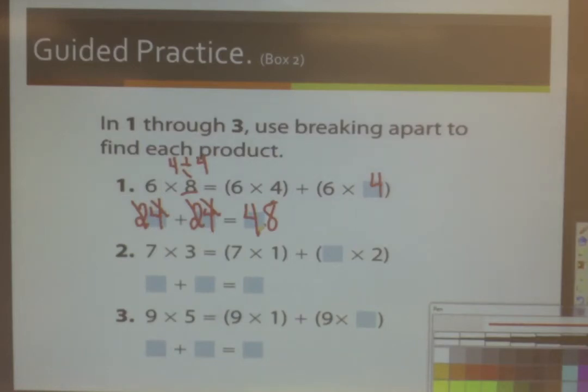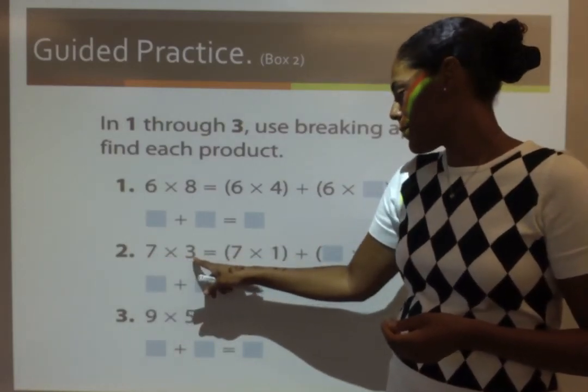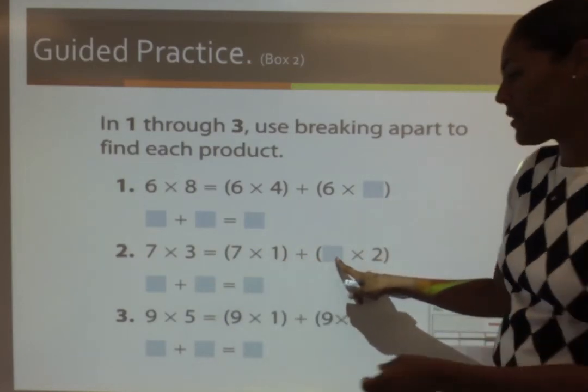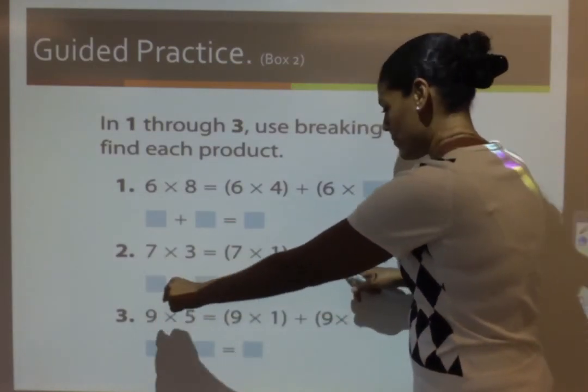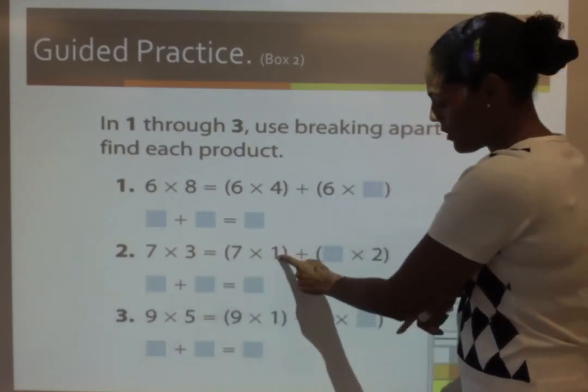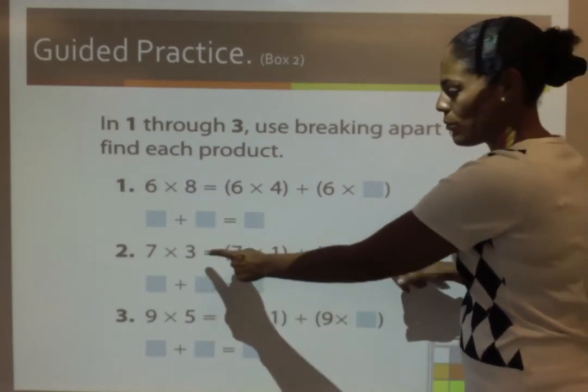Let's try another one. 7 times 3. I see a 7 here. But I don't see one here. Which means that they broke apart the 7. They also broke apart the 3. There's a 1 here and a 2 here. Because 1 and 2 make 3.